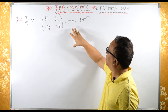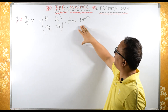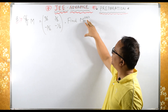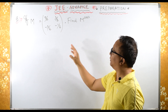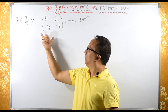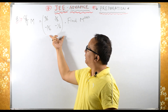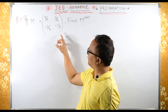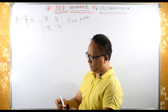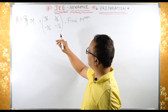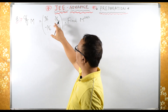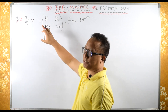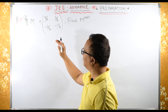M is given and we need to find M raised to 2023. Look at here, we need to bring some pattern. After looking at this matrix, can you convert all these things into 3/2 plus something or 3/2 minus something?